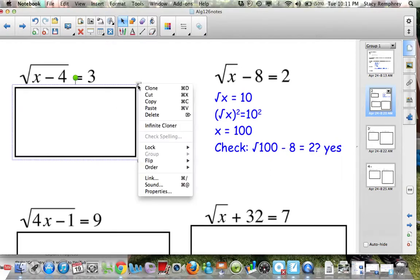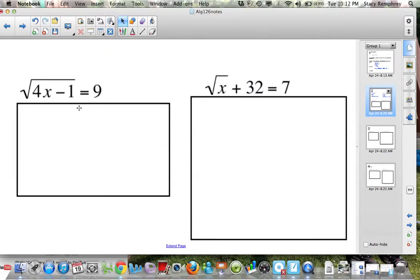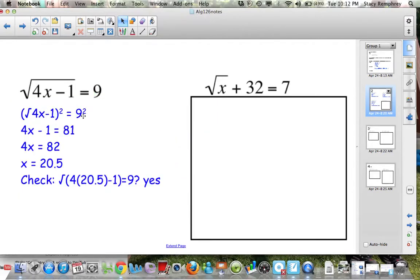I'll reveal the answers to these. This one, the square root was already by itself, so I squared both sides and I solved. You can see I checked. Again, push pause because I'm going to move through the answers pretty quickly. In this one, the first thing I checked is, is the square root by itself? It is. So I squared both sides, solved, and checked.